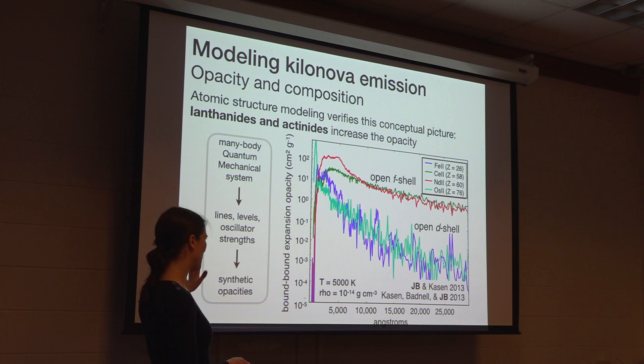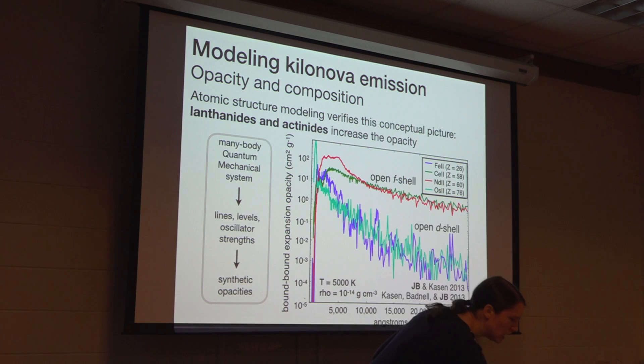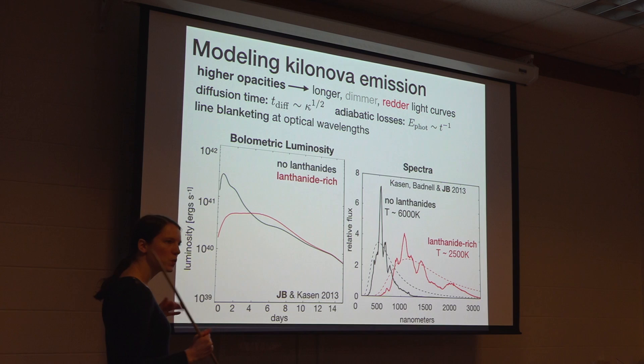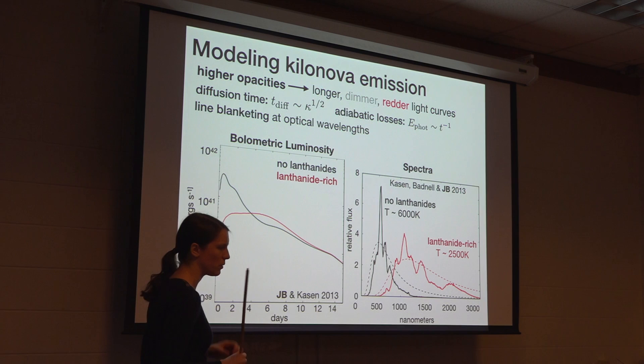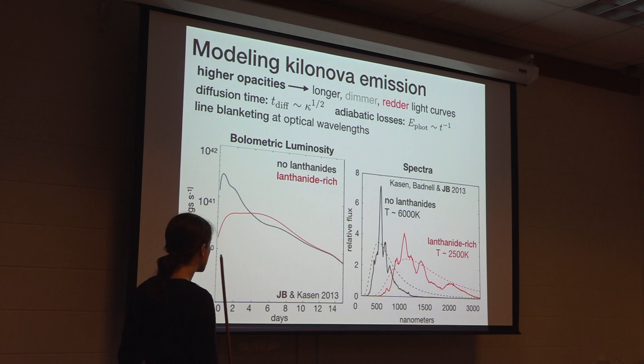Okay, great. So the take-home point for this plot is just that once you start adding into your compositions these complex atoms that have their valence electrons in an open f-shell, you really crank up the opacity. And the effect of this high opacity is of course going to have a major impact on the kinds of light curves and spectra that we expect to get, which you can see from these plots — results of one-dimensional time-dependent radiation transport calculations of kilonovae. These are two models that are the same in every respect except for the composition. The red curves represent a composition that is rich in lanthanides.